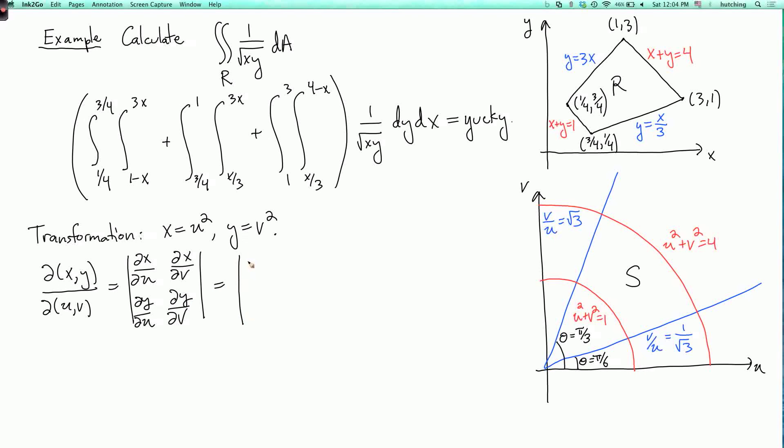So dx du is 2u. dx dv is 0. dy du is 0. And dy dv is 2v. So I get 4uv.